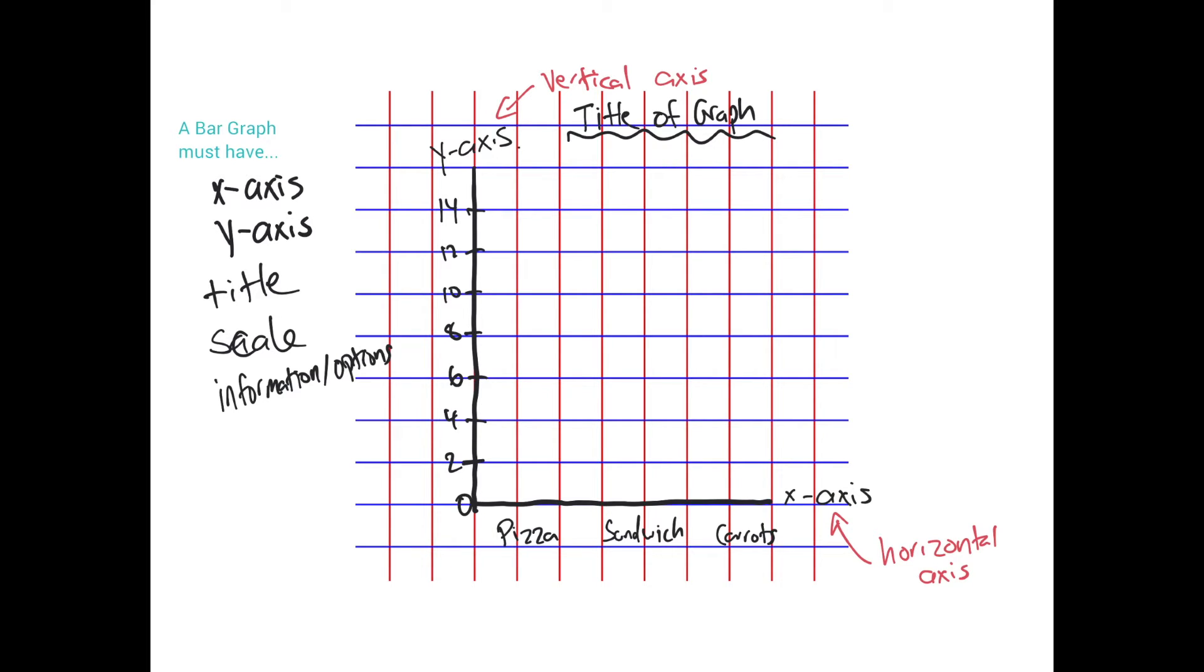And the last thing you need is labels. So labels down here and over here would be say favorite food and then say number of students. Labels will always vary. They change depending on what kind of graph you are doing.